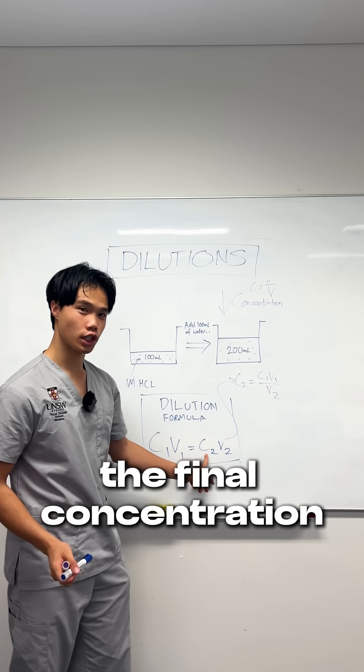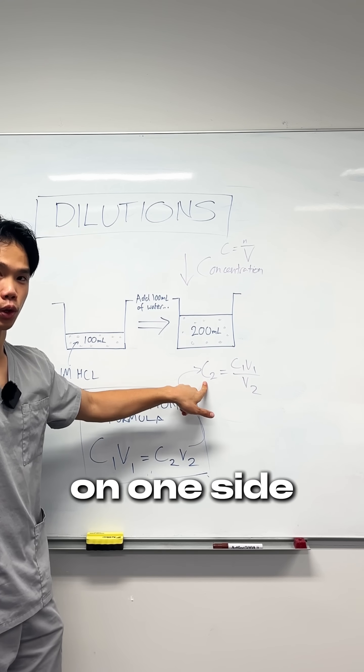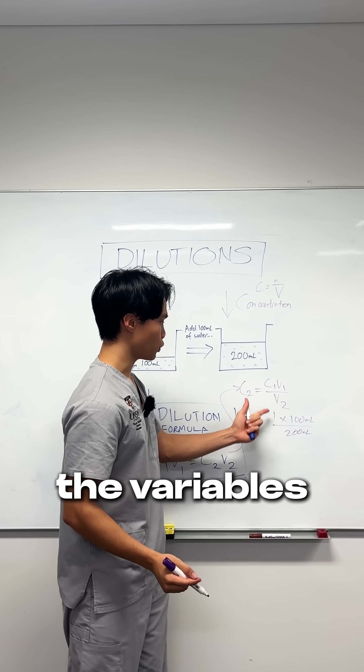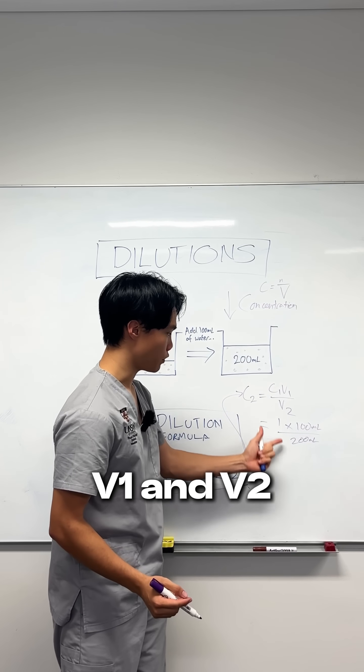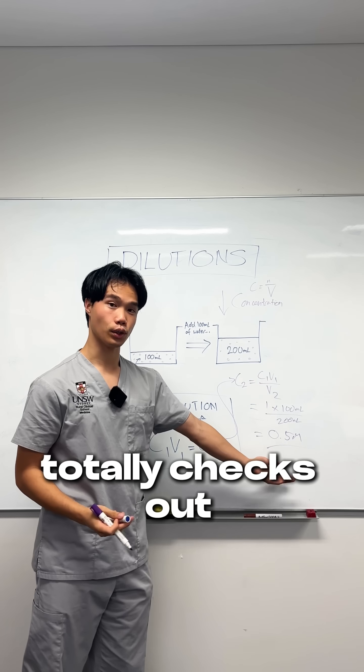To find the final concentration after dilution, you put C2 on its own on one side. Then by substituting in each of the variables for C1, V1, and V2, we find the answer is 0.5.